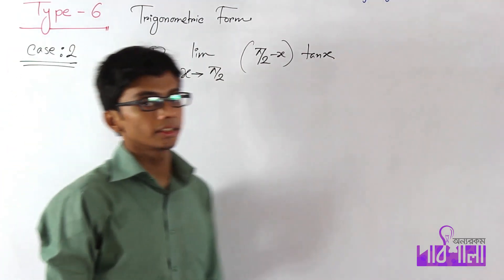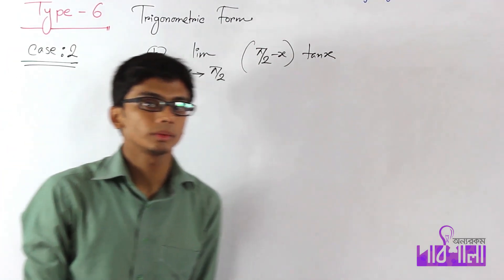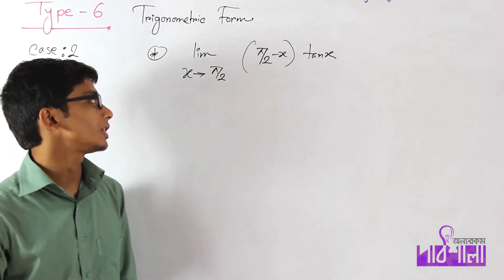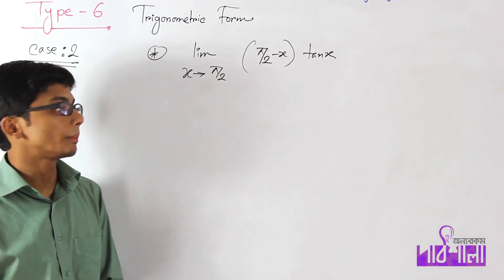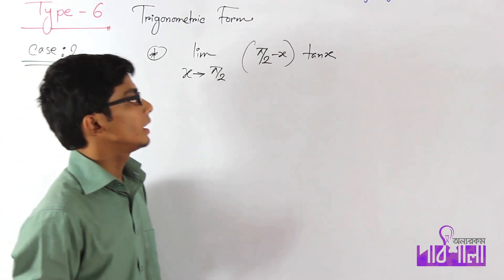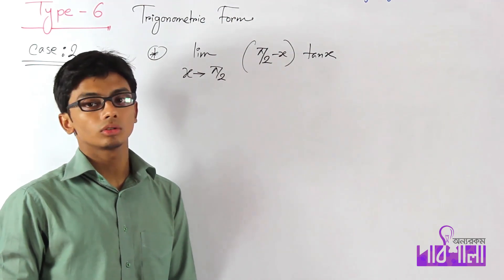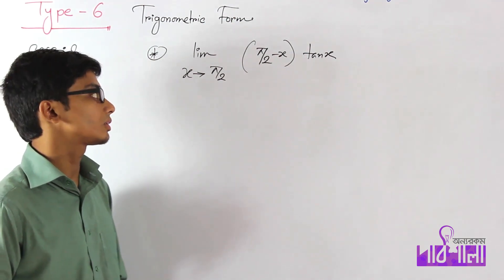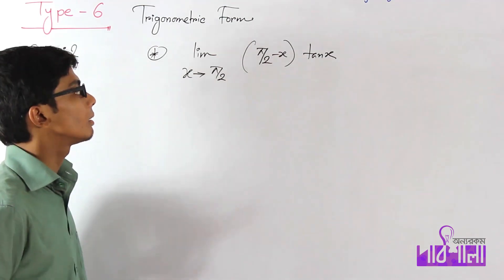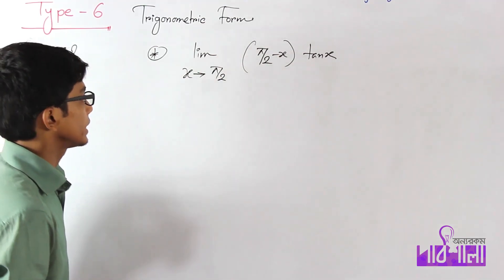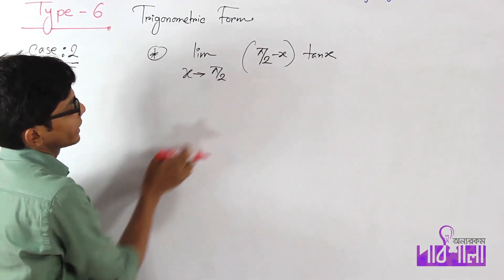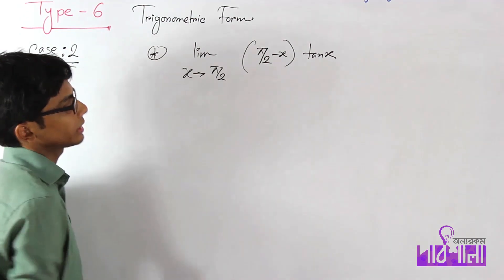If you have a limit of a trigonometry format, you can see the limit of x tends to 0. You can see π/2, π, π/3. If you have a limit of trigonometry format, you can see the limit of x tends to π/2.